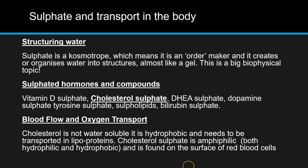With respect to transport in the body, sulphate is something called a kosmotrope, which means it's an order maker — very briefly, it creates and organises water into structures around itself, almost like a gel. This is a very big biophysical topic that I'll come back to in future videos, as it relates to exclusion zone water and the hydrophobic effect.